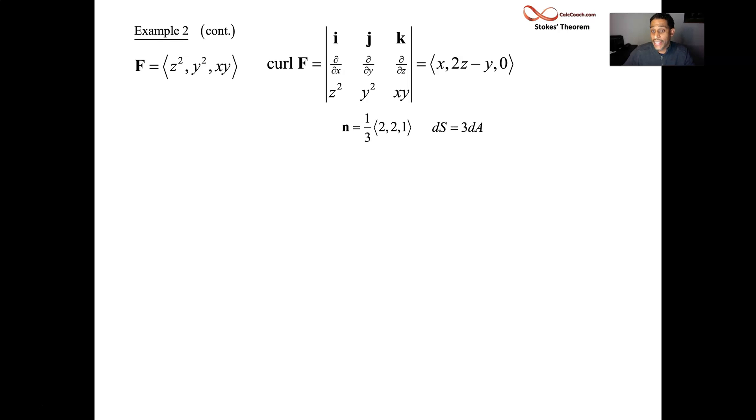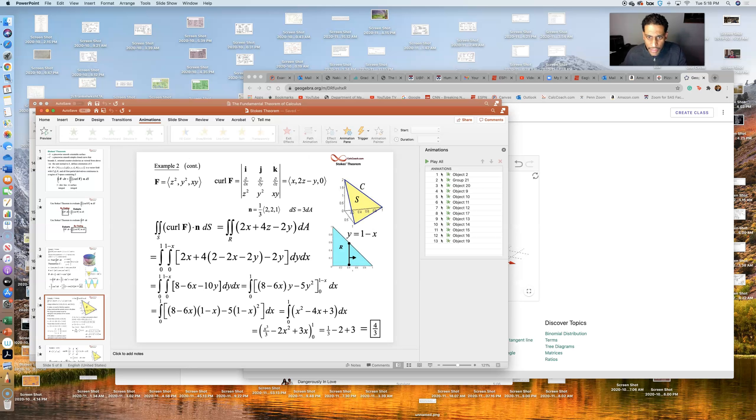It is that curl that we dot with our normal vector. And we multiply by dS. So those 3's cancel out. We dot, we get 2x, we get 4z minus 2y, and then we get a 0. This is just a double integral. Over what? Over the region that is the shadow region in the xy plane.